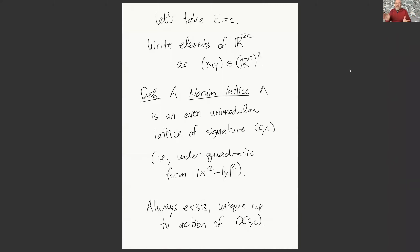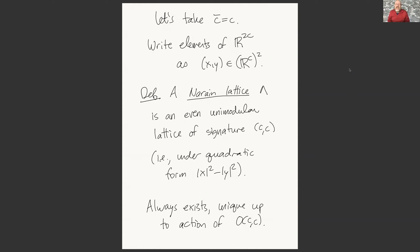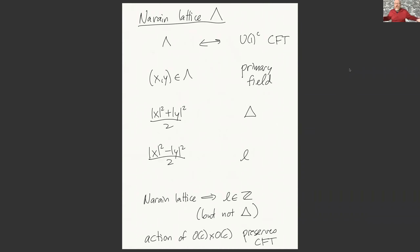Narain considered even unimodular lattices Λ of signature (c,c), meaning we use the quadratic form x²−y², every vector has even integer length under this norm, and the lattice has determinant 1—it is self-dual. Such a lattice exists for every c and is unique up to the action of the split orthogonal group O(c,c). So u(1)^c CFTs come from even unimodular lattices of signature (c,c), and it's widely believed this is the only way to get such a thing.